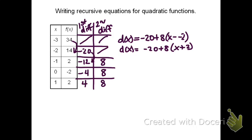Distributing the 8, we're going to see that we get d of x equals negative 20 plus 8x plus 16. And then further simplifying it, we'll see that we get 8x minus 4.